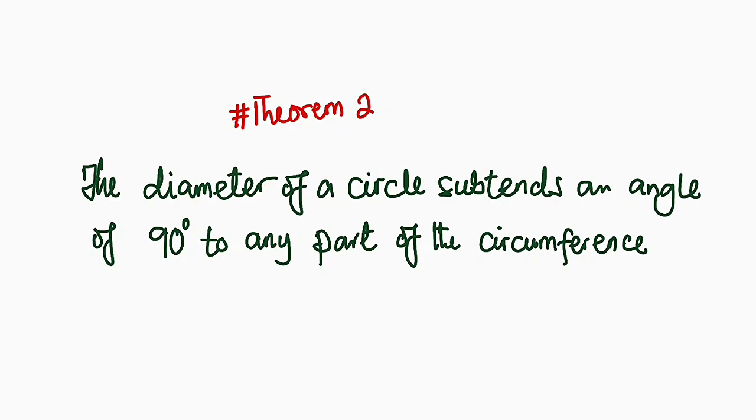Hello good day viewers. Still on cycle theorem, we have theorem number two, which stated that the diameter of a cycle sustains an angle of 90 degrees to any part of the circumference. And that is exactly what we are going to prove in this tutorial.